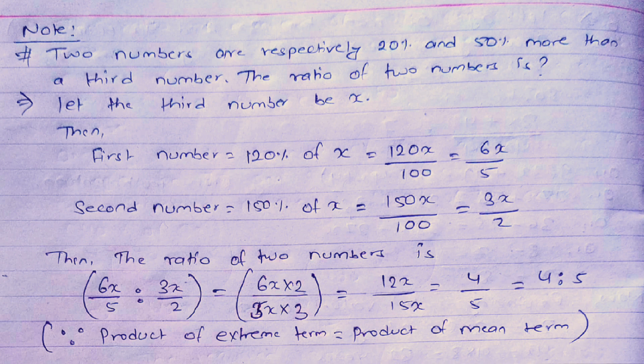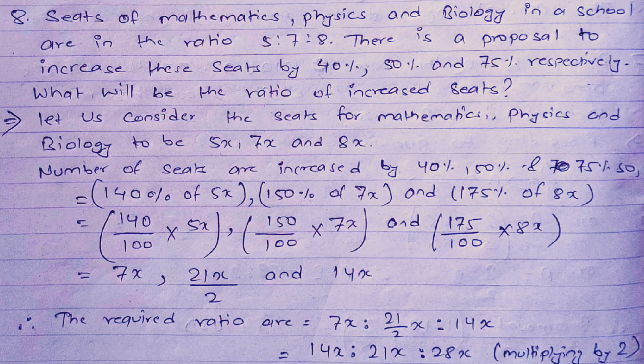Now let's move to question number 8. The question: seats for mathematics, physics, and biology in a school are in the ratio 5 : 7 : 8. There is a proposal to increase the seats by 40%, 50%, and 75% respectively. What will be the ratio of the increased seats? This is similar to the note we just did, where we had percentage increases in the first and second numbers.